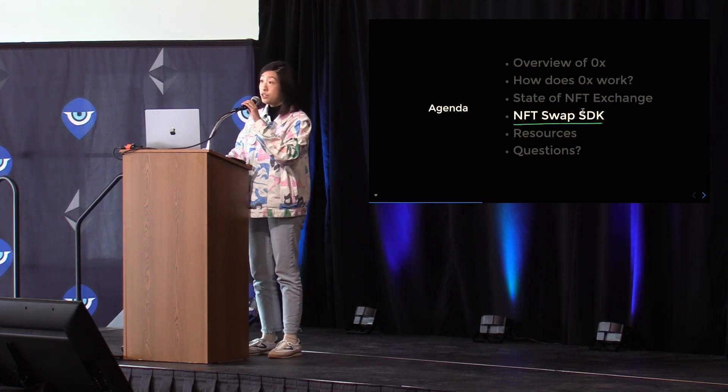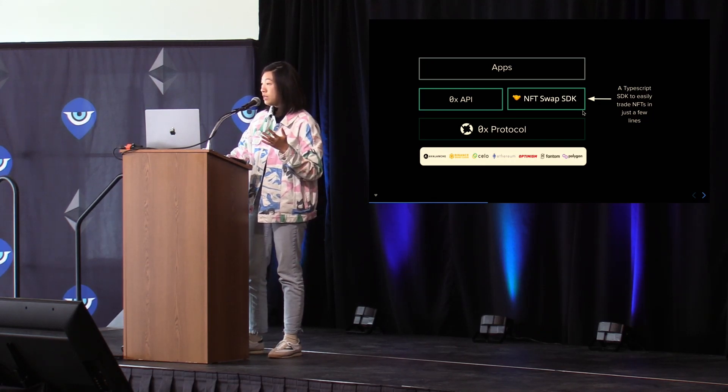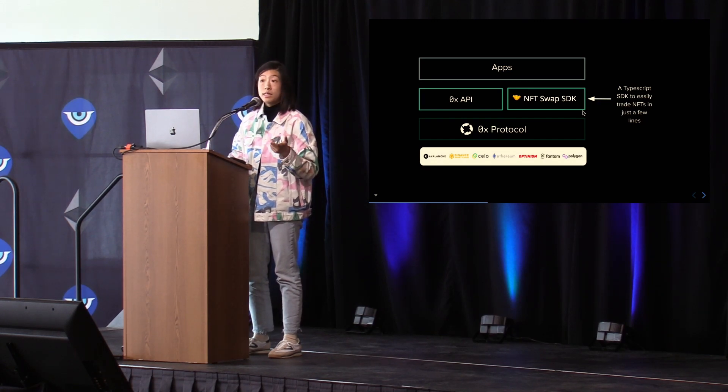Let's dive into the code implementation of the NFT Swap SDK — a really simple TypeScript SDK that allows you to trade NFTs in just a few lines of code. Why build on the 0x protocol? First, creating orders is free. Second, the 0x protocol has the most gas-efficient swap capabilities compared to all other NFT marketplace protocols. We also natively have collection and property-based orders, meaning you can sweep the floor on any collection or buy an item based on specific properties and traits. We have instant royalties built in, and we're multichain by default.